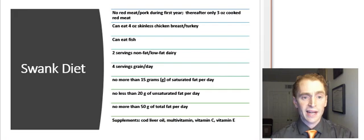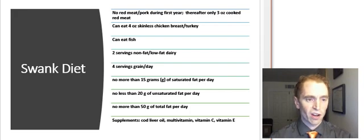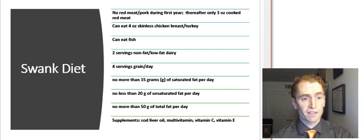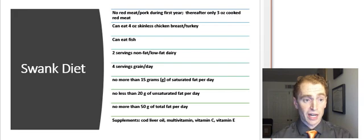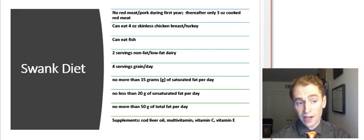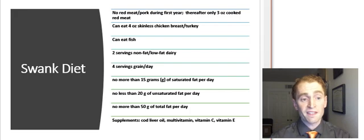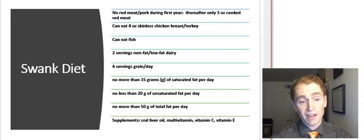What did the Swank Diet consist of? He recommended — across various versions during his long career — no red meat or pork during the first year, and afterwards only three ounces of cooked red meat. You could eat four ounces of skinless chicken breast or turkey, fish, two servings of nonfat or low-fat dairy, and four servings of grain per day. He recommended eating less than 15 grams of saturated fat per day and no more than 50 grams of total fat per day. He also recommended supplementation with cod liver oil, which is high in vitamin D, plus a multivitamin, vitamin C, and vitamin E.